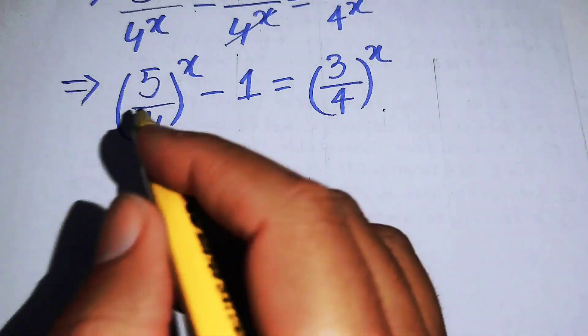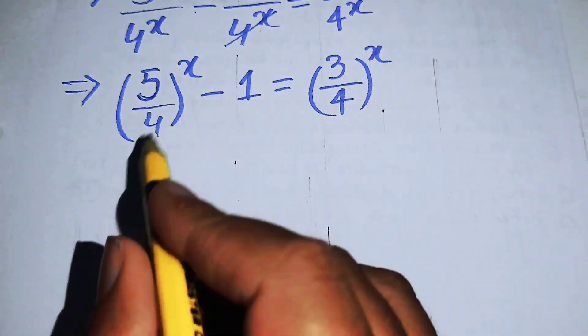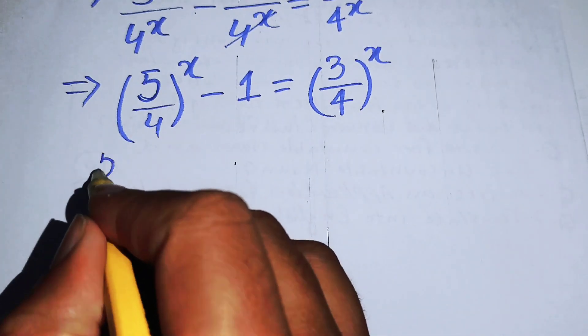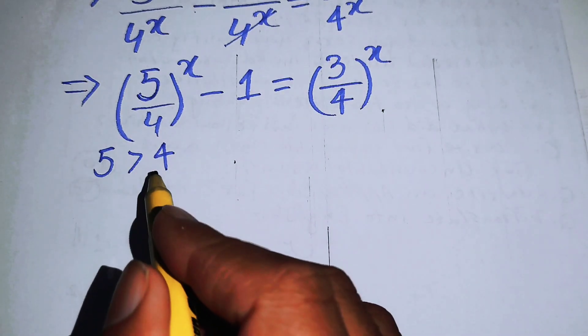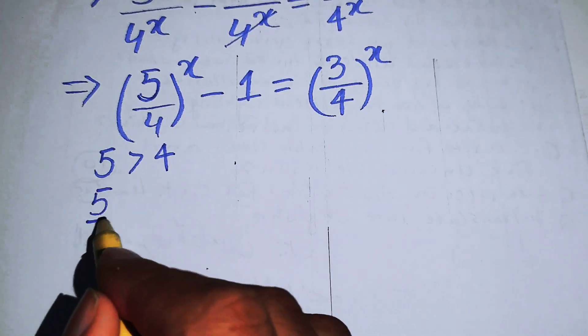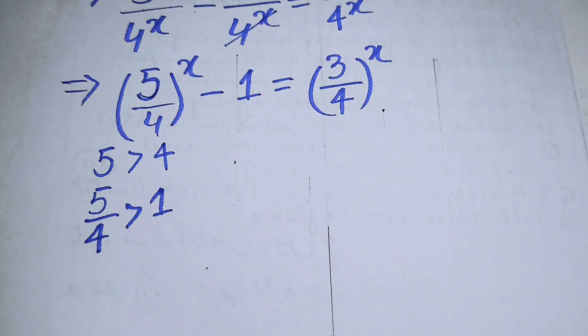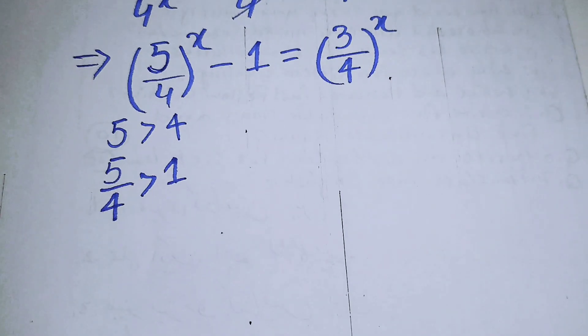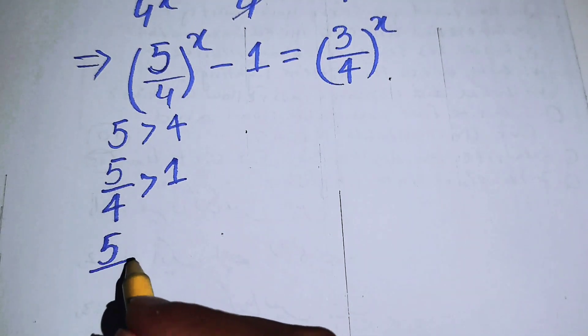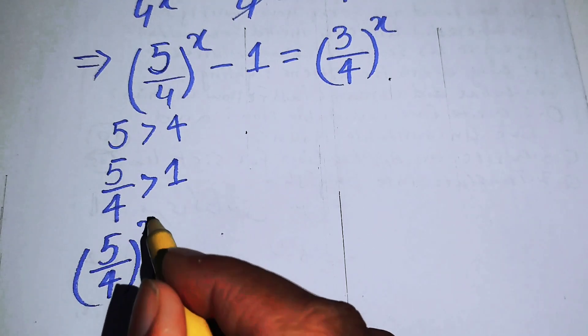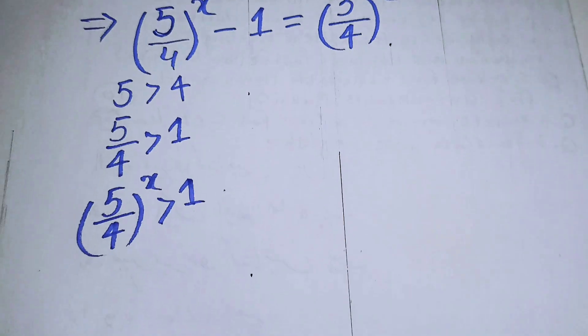In the next step, we focus on the left-hand side. We have 5/4, and since 5 is greater than 4, we know that 5/4 is greater than 1. When we take exponent X on both sides, we get (5/4)^X is greater than 1, which shows that (5/4)^X is an increasing function.